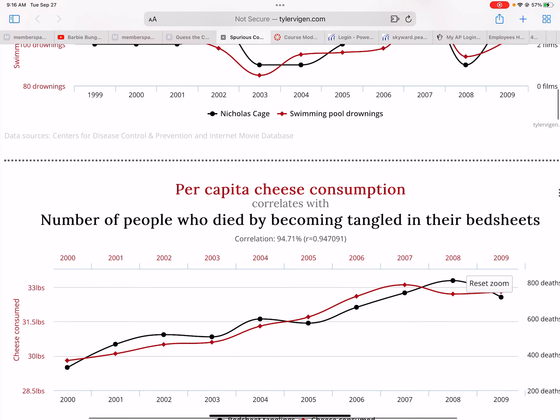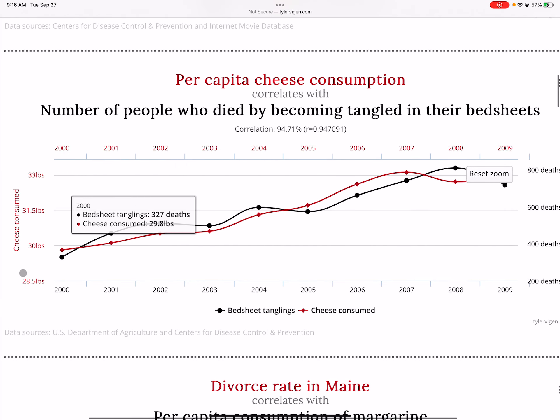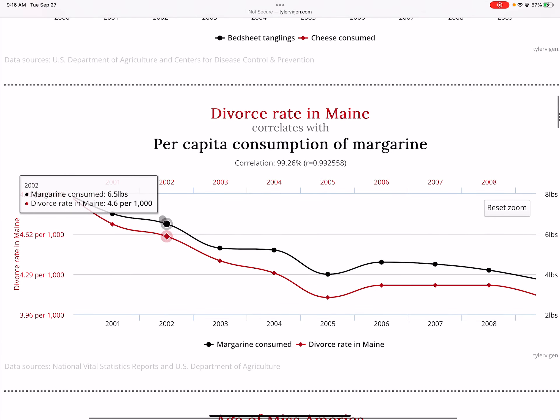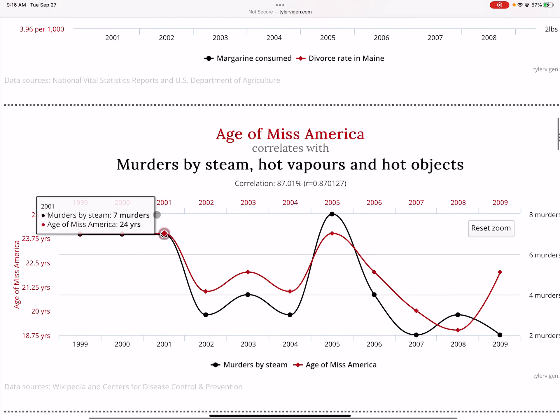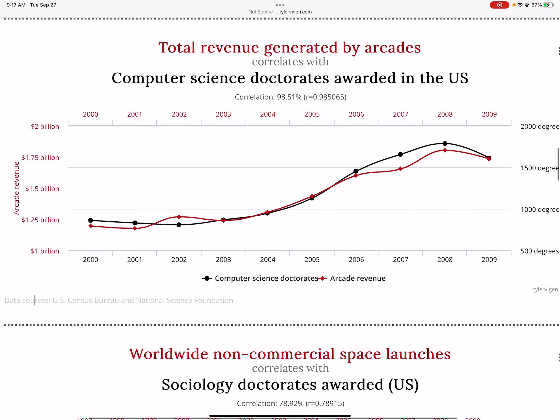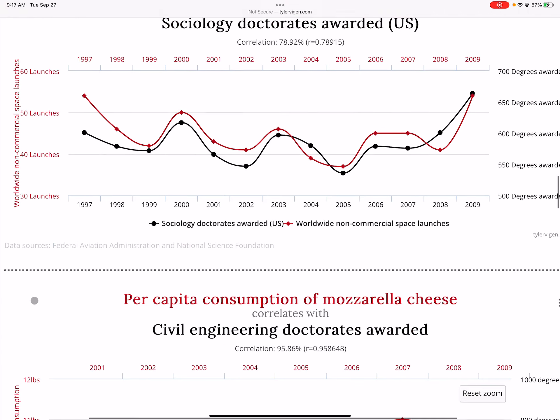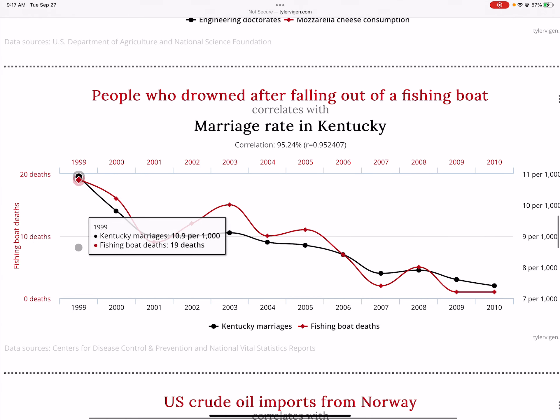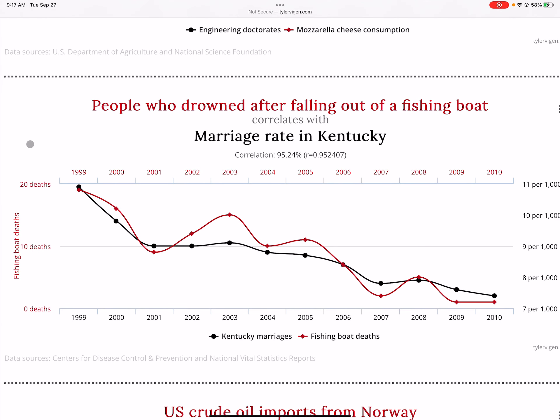This next thing I want you guys to see is that these are actually true correlations. I want you to see that as the per capita of cheese consumption increases, so does the number of people who died by becoming entangled in their bedsheets. As the divorce rate in Maine increases, it correlates with the per capita of consumption of margarine. Well, I could go on and on with these different particular correlations, and they're all correct, and they're all legitimate correlations, but the problem becomes is when I show you the data and I start trying to tell you that people who drowned after falling out of a fishing boat causes the marriage rate in Kentucky to decrease. That would be the issue.